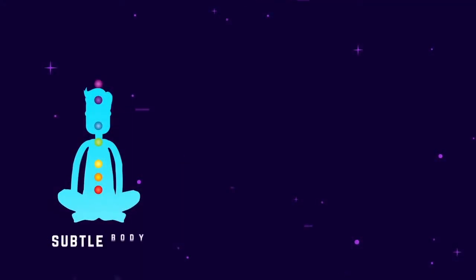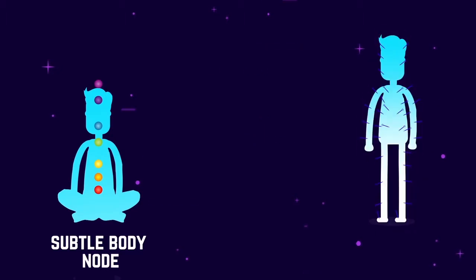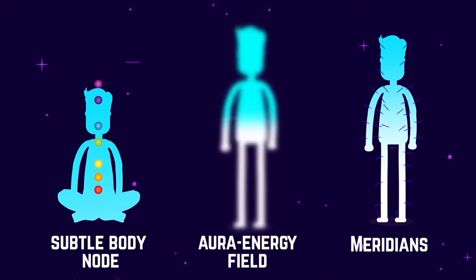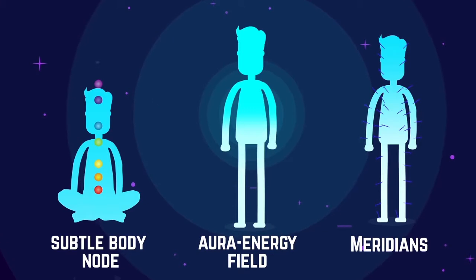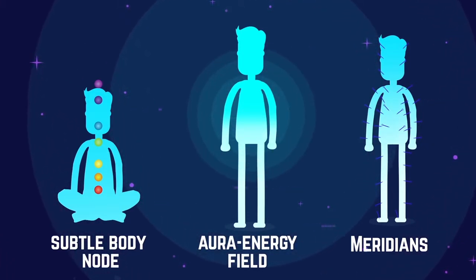For example, like chakra that is thought to be an energy point or node in the subtle body, like acupuncture points in acupuncture treatments that deal with pathways of energy called meridians through the life energy body, or like layers of aura energy field that every layer presents its different body. You can also see these layers on Kirlian photography.